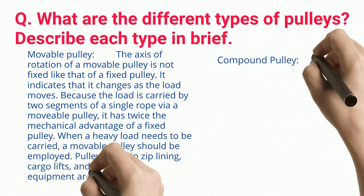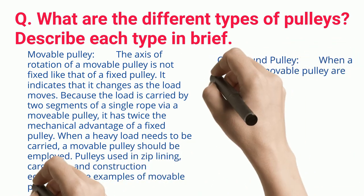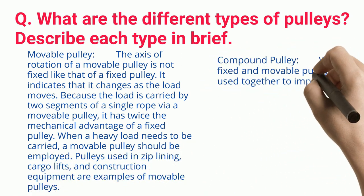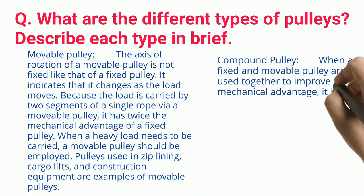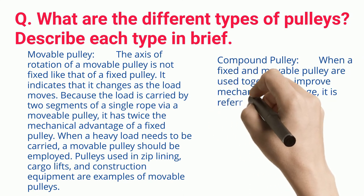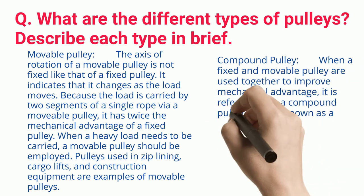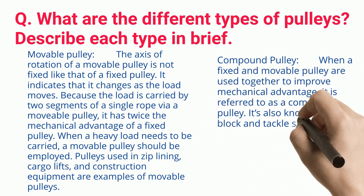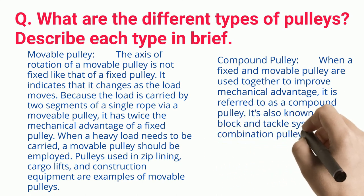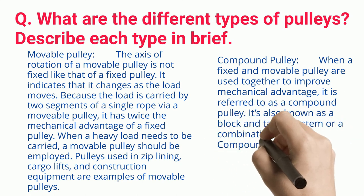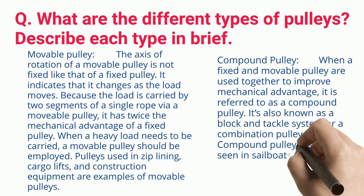Compound Pulley. When a fixed and movable pulley are used together to improve mechanical advantage, it is referred to as a compound pulley. It is also known as a block and tackle system or a combination pulley.